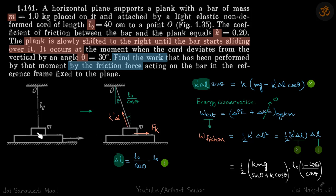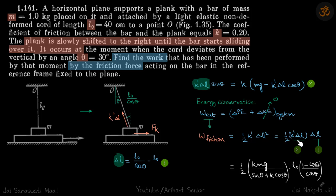The mass is initially at rest, and because the system is moved very slowly, finally we can also assume its kinetic energy to be zero, so ΔKE is zero. ΔPE is the energy stored in the string, which is ½k'·Δl². So work done by friction equals ½k'·Δl², which we can break as k'·Δl into Δl.